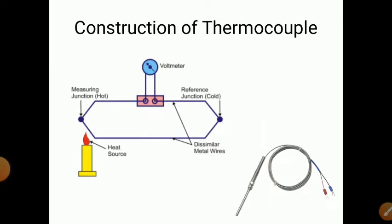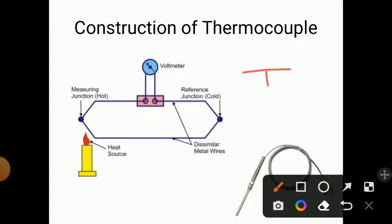A thermocouple is made up of two dissimilar metal wires connected together to form two junctions. One junction is called the hot junction and the second is called the cold junction. The hot junction is also called the measuring junction. As temperature difference occurs between the two junctions, a voltage is induced in the circuit.